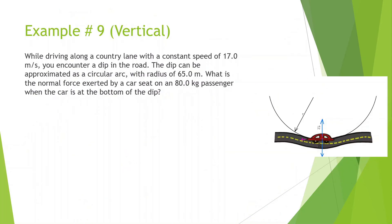While driving along a country lane with a constant speed of 17 meters per second, you encounter a dip in the road. The dip can be approximated as a circular arc with a radius of 65 meters. What is the normal force exerted by the car seat on an 80 kilogram passenger when the car is at the bottom of the dip? The force of gravity from the passenger is going to be 800 newtons, and we're looking for the normal force.